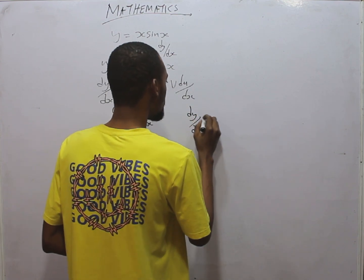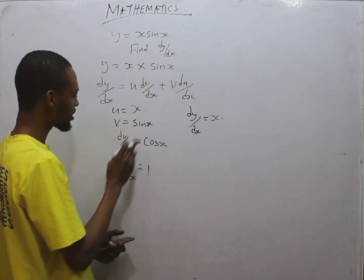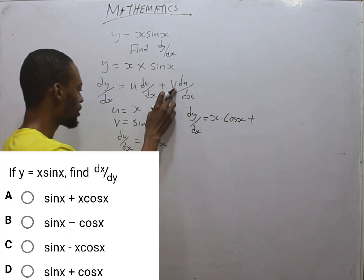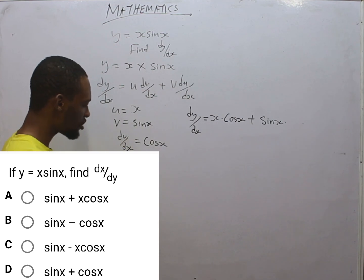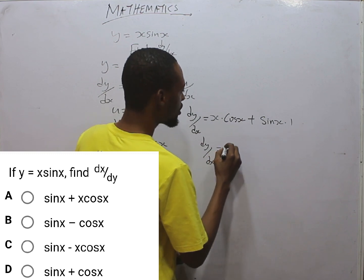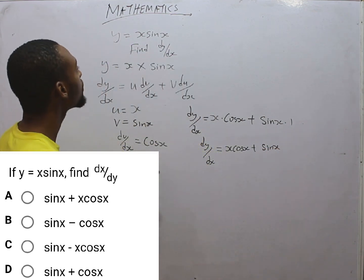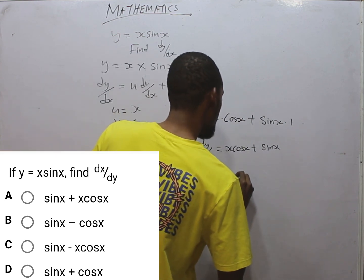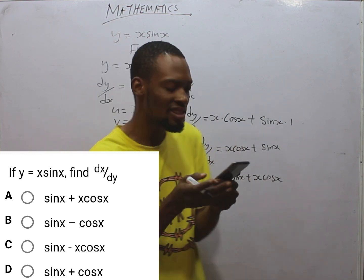dY over dS equals U, S, times dV dS, the V dS is cos S, so cos S, plus V, V is sine S, sine S, times dU dS, dU dS is one, so times one. So dY dS is simply S cos S plus sine S. That is what you get when you differentiate S sine S. You simply have S cos S plus sine S, or sine S plus S cos S. They are the same. So option A is the correct option.